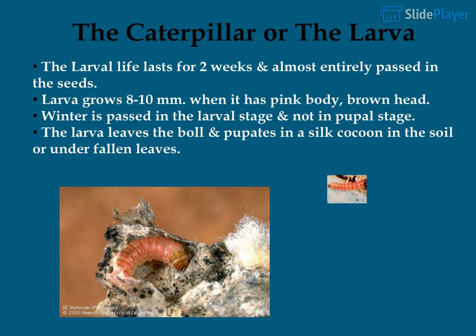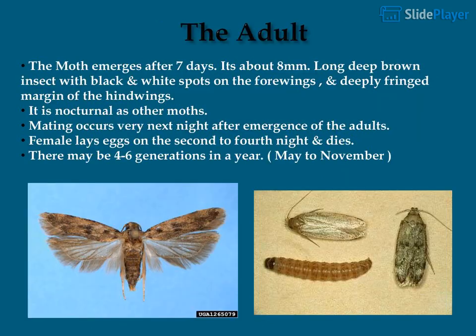The larval life lasts for two weeks and is almost entirely passed in the seeds. The larva grows 8 to 10 millimeters, with a pink body and brown head. Winter is passed in the larval stage, not the pupal stage. The larva leaves the boll and pupates in a silk cocoon in the soil or under fallen leaves.